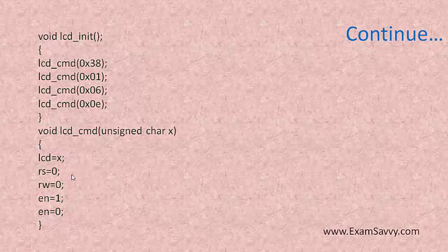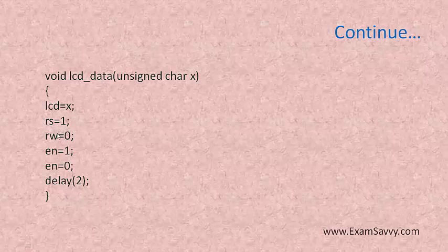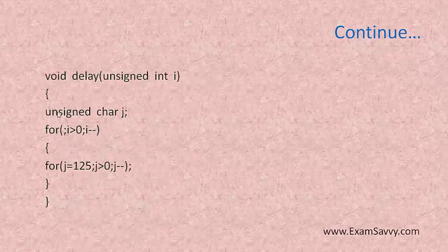When the command function is called, we store the passed value into a character variable and move it to the LCD port. We make register select zero because it is command mode, and read/write is also zero for a write operation. We then apply a high pulse on enable. For data mode, register select is set to one, read/write is zero, and enable is pulsed high. A delay is called to allow time for data exchange. The delay function generates approximately a 2-second delay.